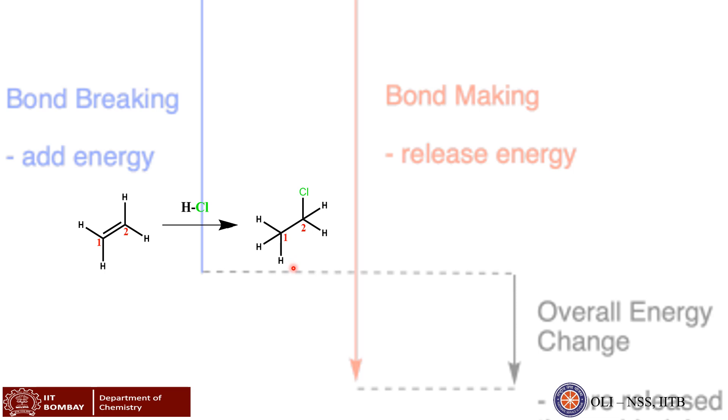In the product, we see this hydrogen atom forming a new bond with carbon 1 of ethane and chlorine atom forming a new single bond with carbon 2. Thus, a new product ethyl chloride or chloroethane is formed.